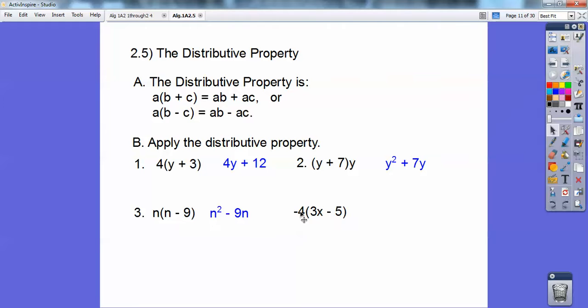This one you've got to distribute not just the 4 through, but the negative 4 through. So negative 4 times 3x is negative 12x. And then right here, this becomes a negative times a negative is going to be a positive. So this is going to be negative 12x plus 20.